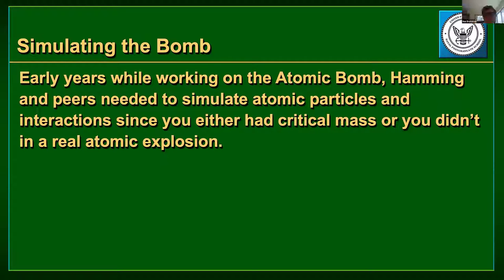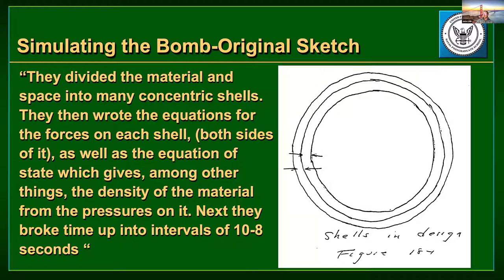Obviously they couldn't test this except once or twice at the very end. As they were going iteratively, they could not test in a real environment because of the danger. Those shells are diagrammed on the right-hand side. This is a direct quote from him: they divided the material in space into many concentric shells, and wrote the equations for the force on each shell.